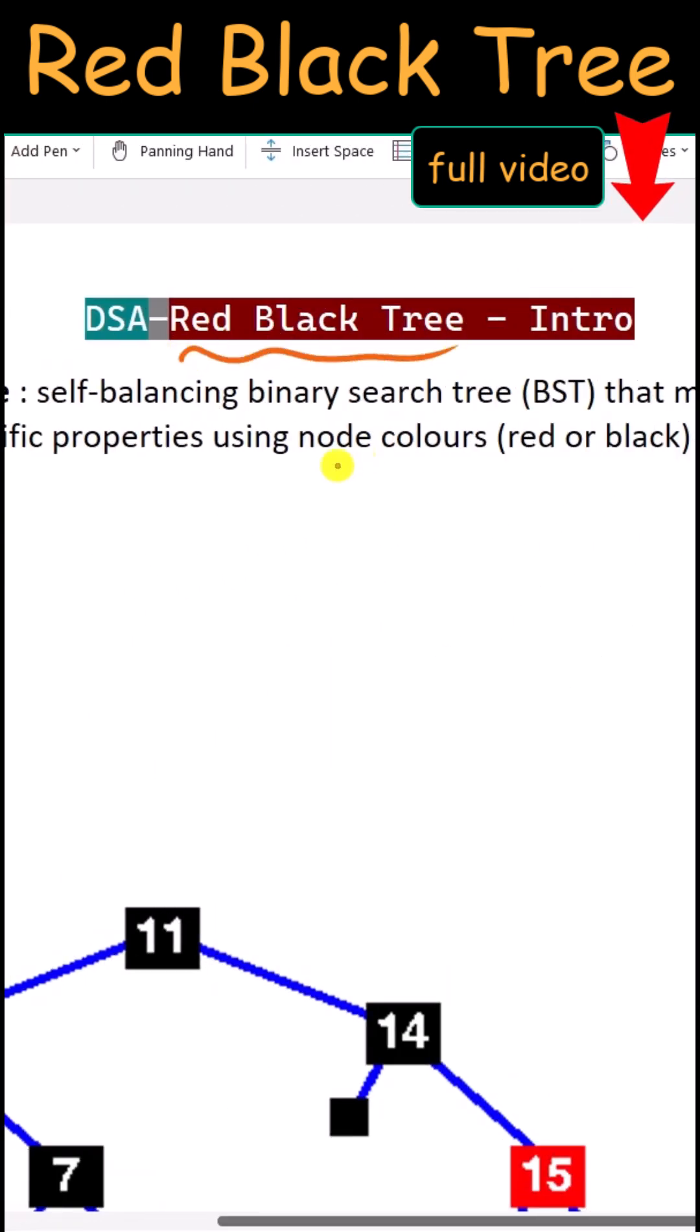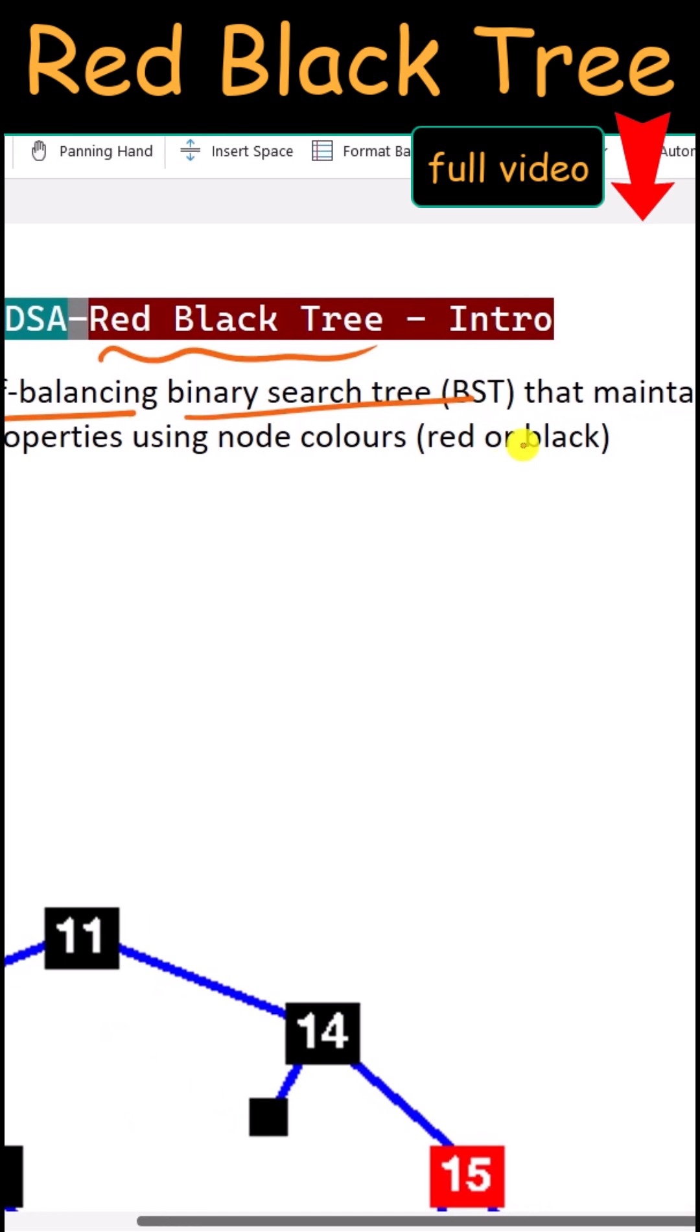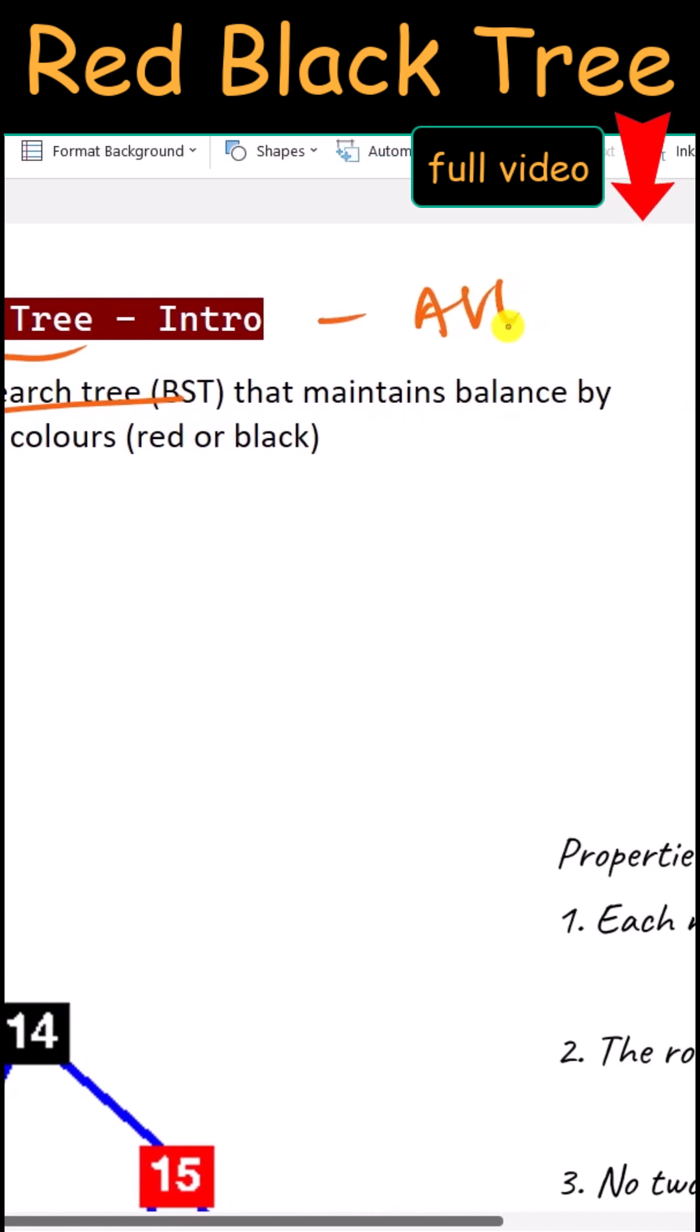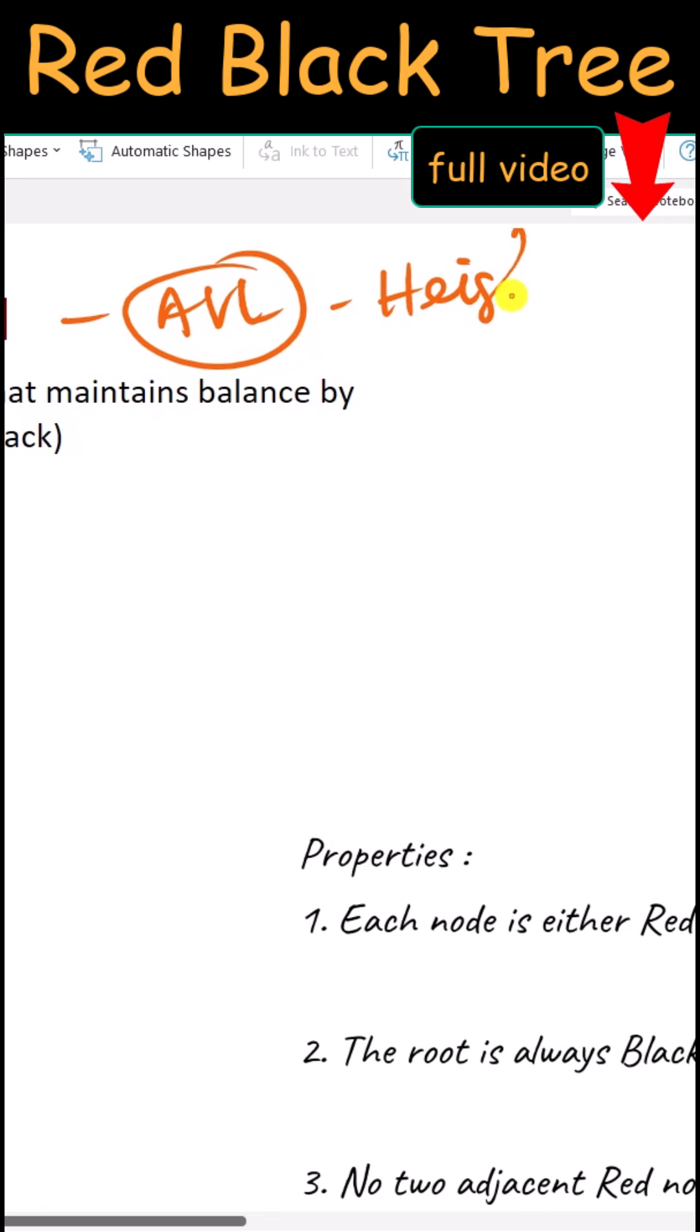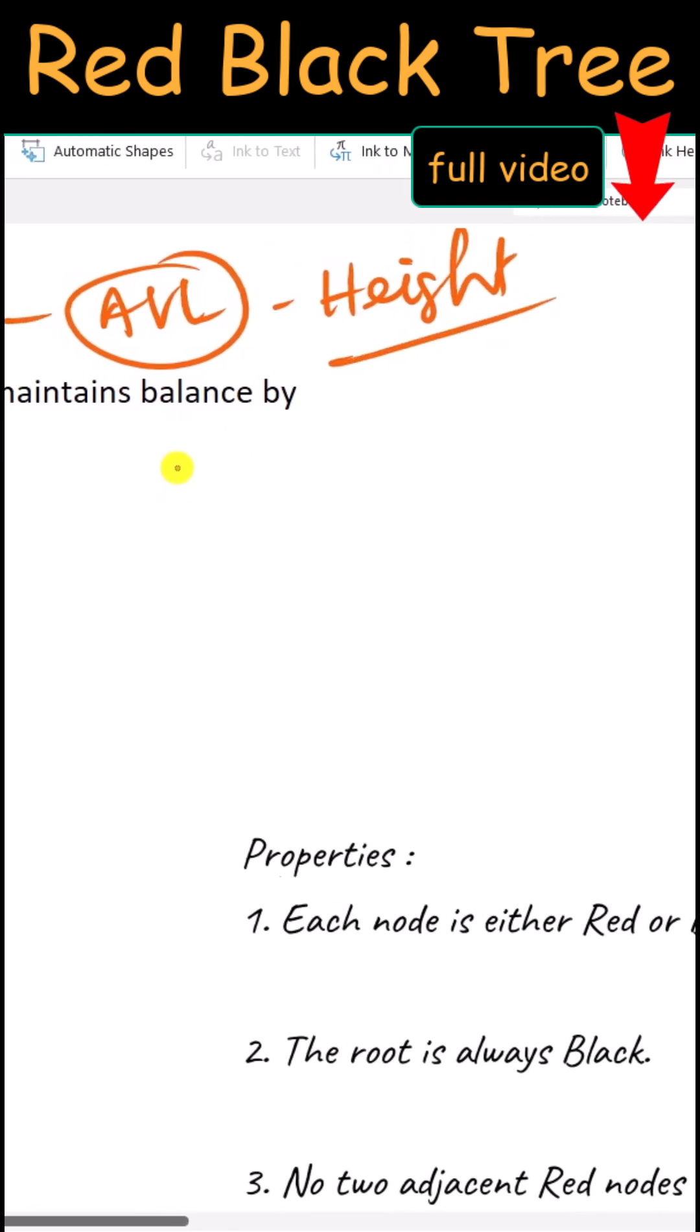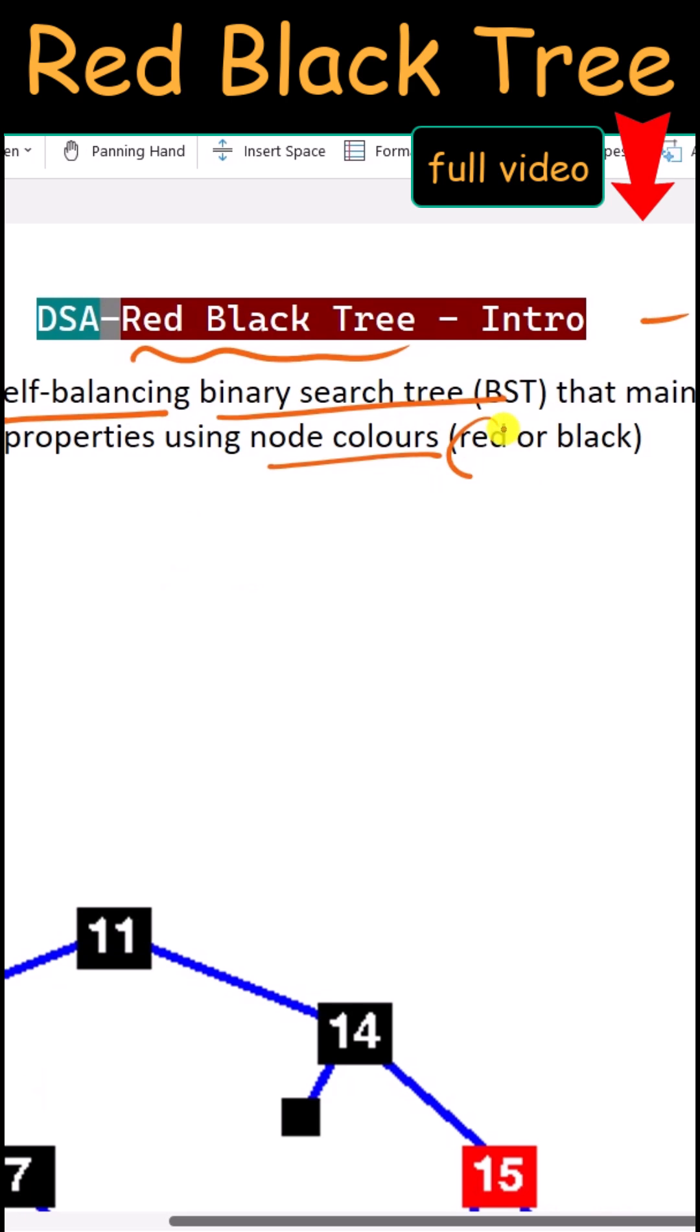Let's talk about the red-black tree. The red-black tree is a self-balancing binary search tree, just like the AVL tree. But the difference is that AVL tree uses the height of the left and right subtrees to balance the tree, whereas the red-black tree uses node colors, either red or black.